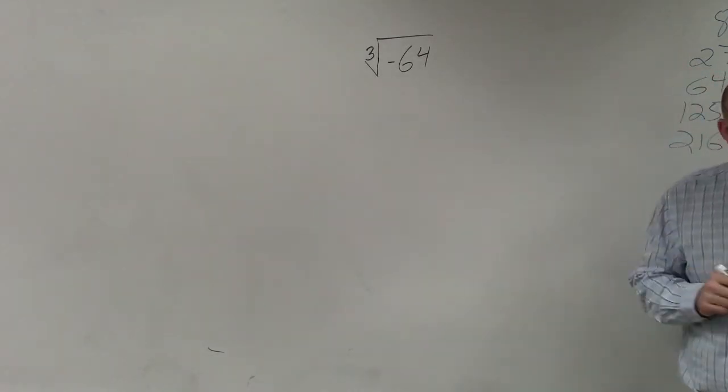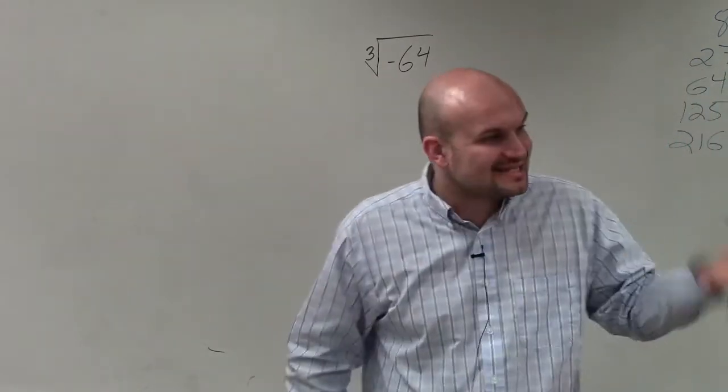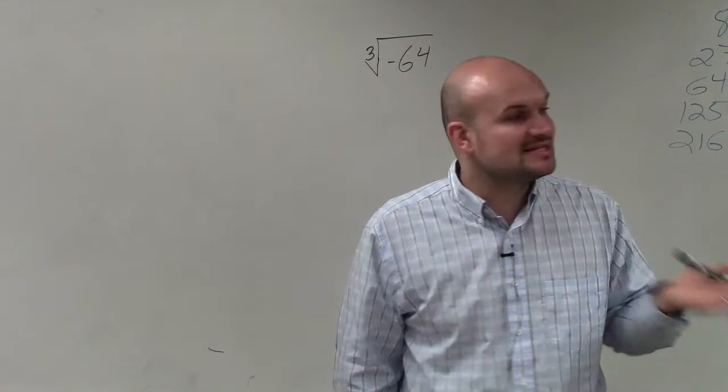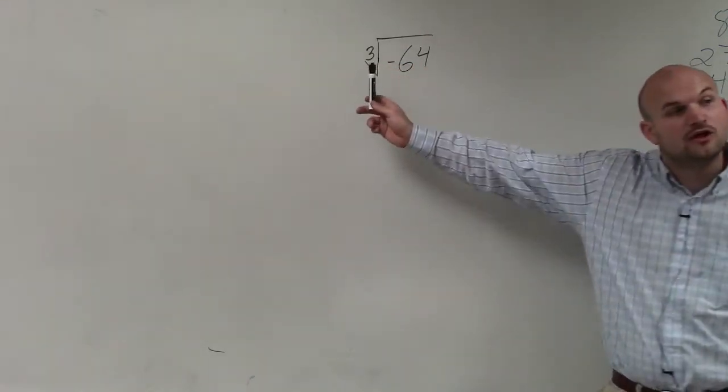So if I'm going to look into taking the cube root of negative 64, what we're looking into is what number multiplied by itself, what exact same number multiplied by itself, is going to give us negative 64. But remember, that number has to be multiplied by itself three times.